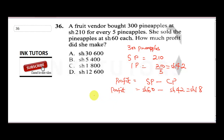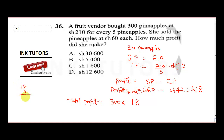She made this profit on every pineapple she sold, so the total profit will be 300 times 18 shillings. Multiplying: 18 times 3 gives 54, then adding two zeros gives 5,400 shillings. So the correct answer is B.